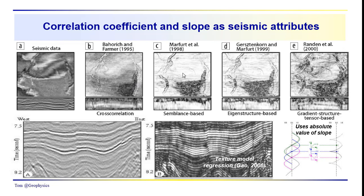We have some other examples here: semblance-based, eigenstructure, and gradient tensor-based estimations. You can see they do, to a varying degree, a good job of pulling out features in the seismic data that you might not otherwise see. Although this is a pretty good seismic data set, you can see some channeling over here, and the techniques used have certainly enhanced the appearance of the channels.